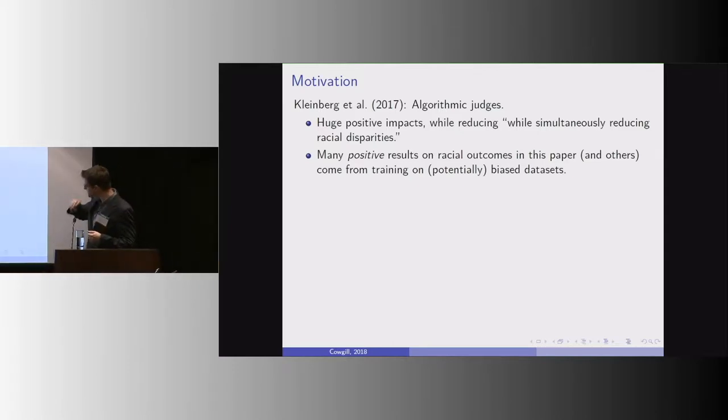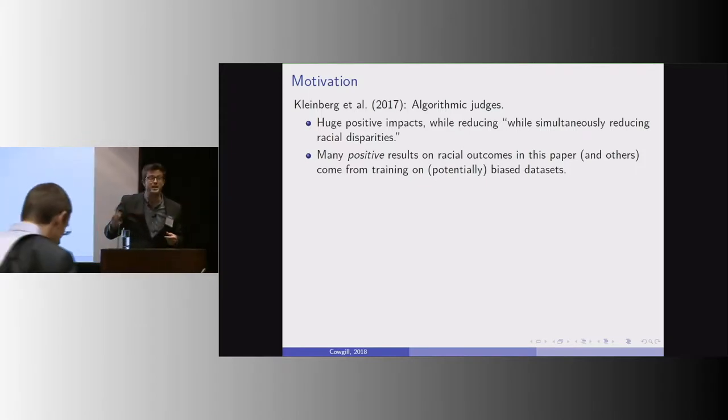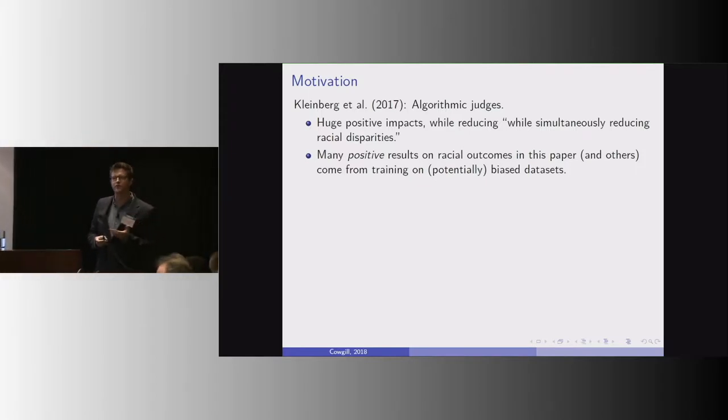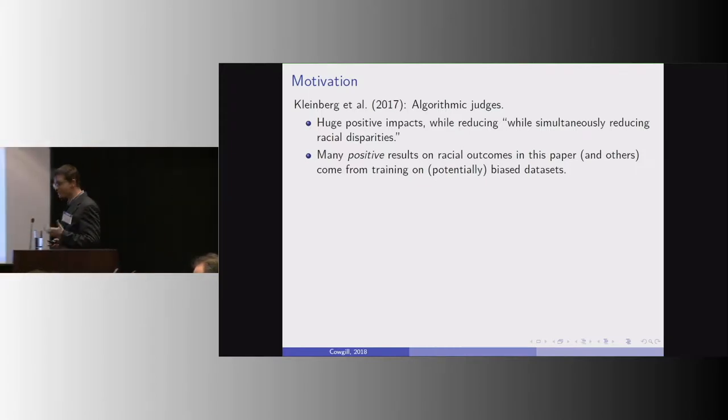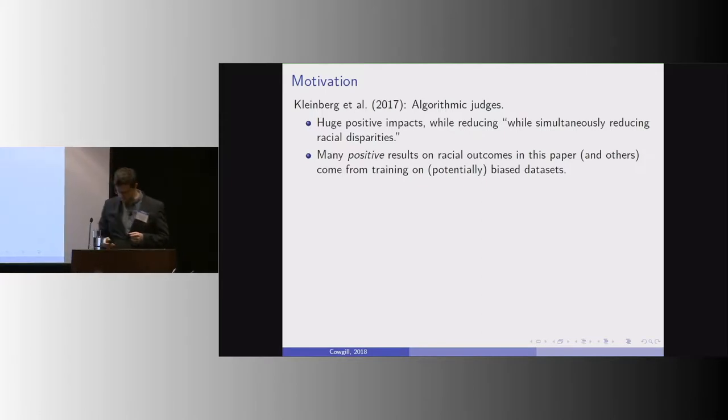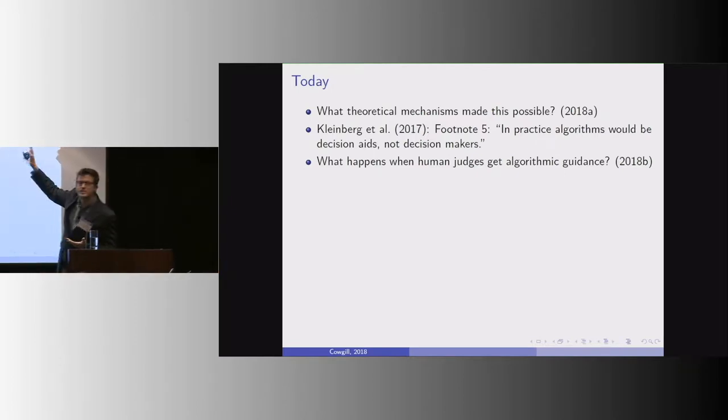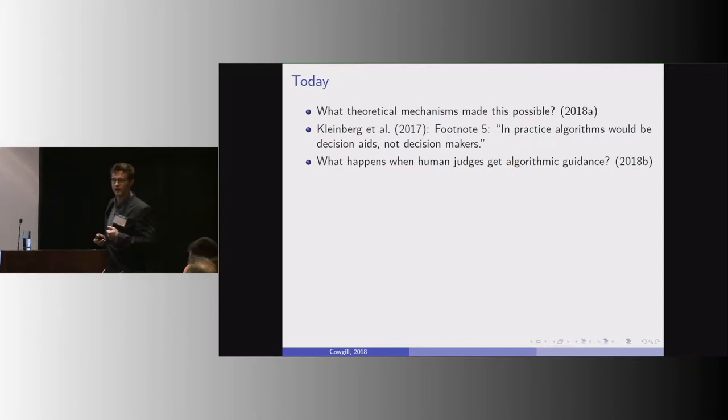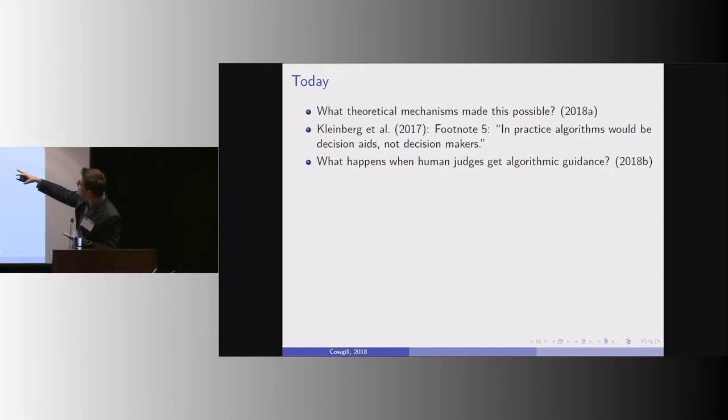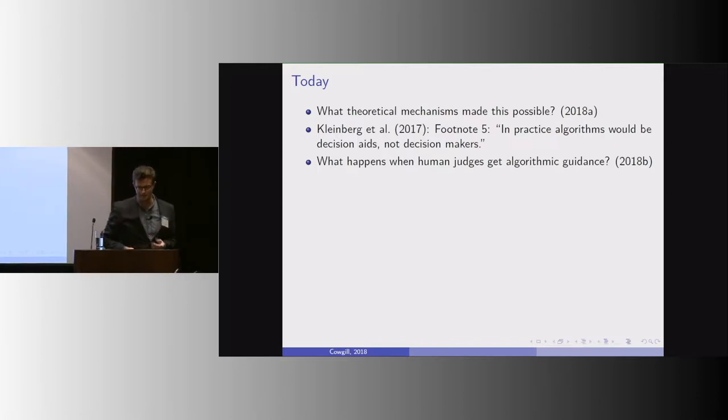And this happens in spite of the fact that the outcomes in this paper and many others came from data sets that were trained on that probably had some biases in them. So I'm going to be talking about two papers and two topics today. First is a theoretical model of what mechanisms make this possible for us to actually decrease bias even in spite of bias training data sets, and then also what happens in the real world when judges get algorithmic guidance.